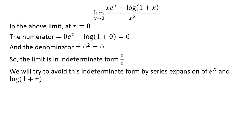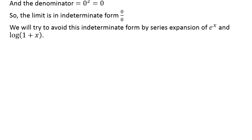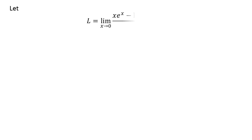We will try to avoid this indeterminate form by series expansion of exponential of x and natural log of 1 plus x. Let L be equal to the limit of x times exponential of x minus natural log of 1 plus x, upon square of x, as x approaches 0.